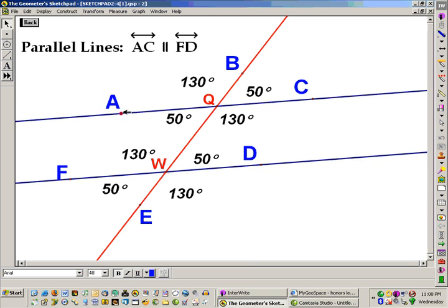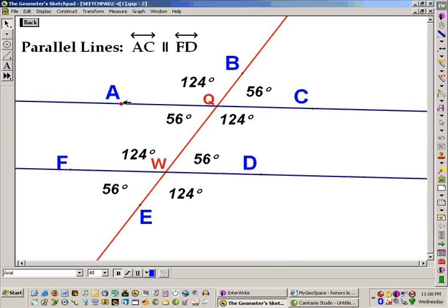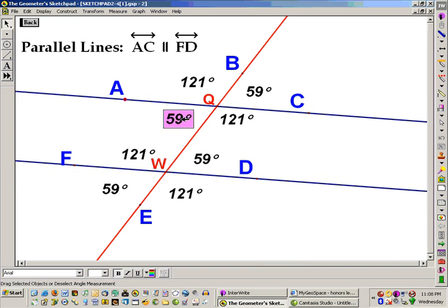Either angles are equal, or angles add up to 180, or supplementary. So again, if the lines are parallel, we know certain angles are equal. Now the question is, if certain angles are equal, how do we know the lines are parallel? So it's kind of the same question backwards.